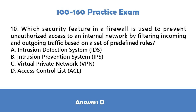Question 10: Which security feature in a firewall is used to prevent unauthorized access to an internal network by filtering incoming and outgoing traffic based on a set of predefined rules? A. Intrusion Detection System, B. Intrusion Prevention System, C. Virtual Private Network (VPN), D. Access Control List (ACL). Answer: D.